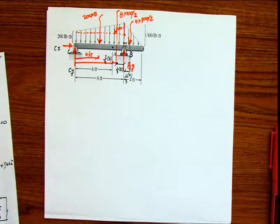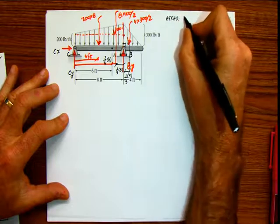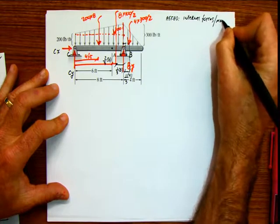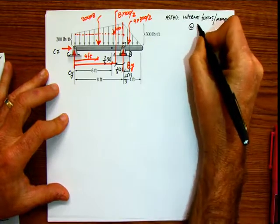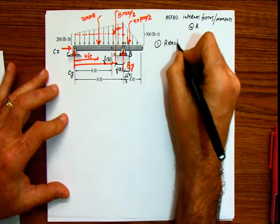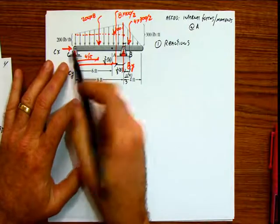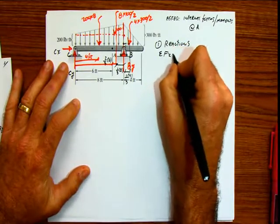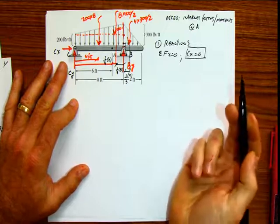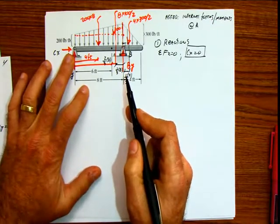Now we are done with load decomposition. We are asked to calculate internal forces and moments at point A, so we start with our reactions. For summation of forces in x equals 0, Cx equals 0 — nothing else acts in x. If I do summation of forces in y, I get stuck with both Cy and By as unknowns, so I'm going to do summation of moments at C.